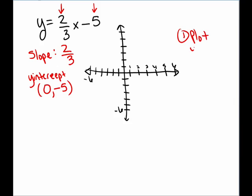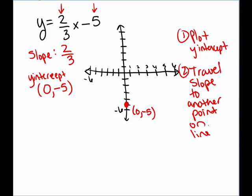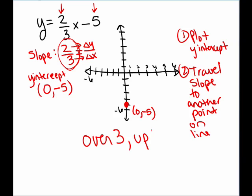The first step is to plot the y-intercept. The y-intercept is a point on this line, so I plot that point — I know this point is on my line. I then travel the slope to another point on the line. The slope is 2/3, which means change in y over change in x. So the change in x is 3 and the change in y is 2. Every time we go over, increasing x by 3, we go up and increase y by 2. So I put my cursor on the point (0, -5), go over 3, then up 2, and plot another point, because this point is also on the line.